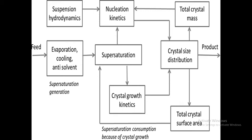The crystalline population coming out from a crystallizer is characterized by its crystal size distribution, which can be expressed in different ways. Crystal size distribution may refer to the number of crystals, the volume, or the mass of crystals, with reference to a specific size range or cumulative values up to a fixed crystal size. Total crystal surface area relates to supersaturation, and total crystal mass relates to nucleation kinetics.